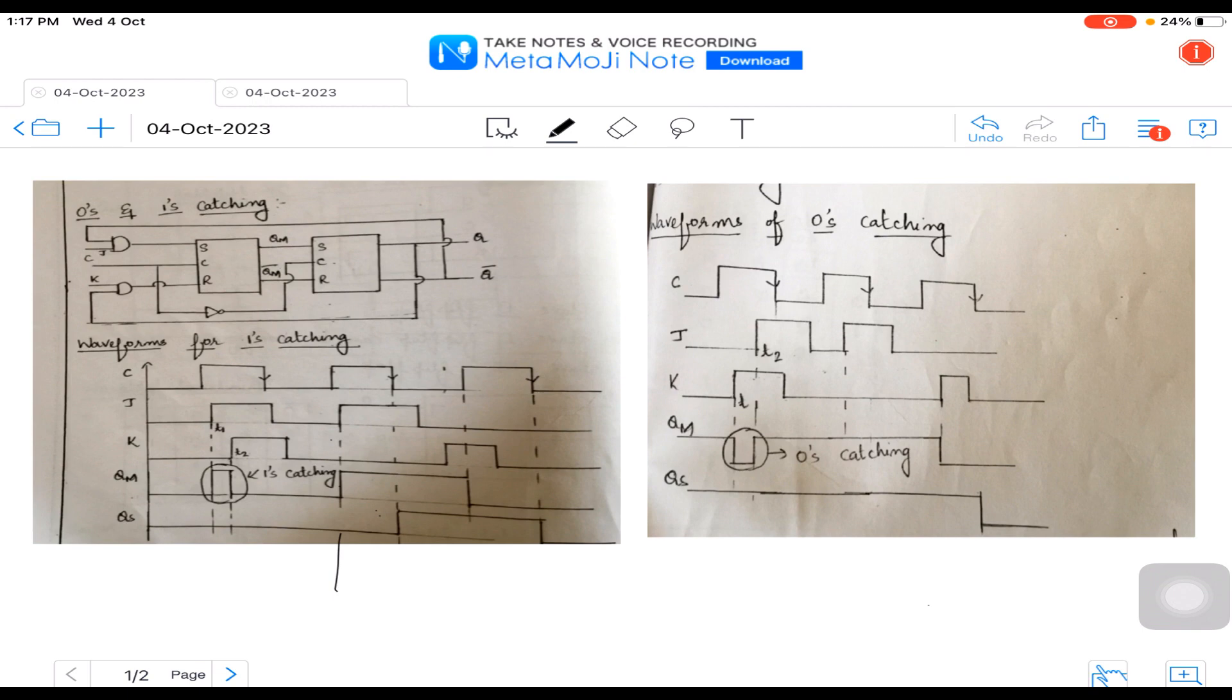Let us observe the circuit diagram for 0s and 1s catching. When you observe, we have considered SR flip-flop as master and slave. You can observe the circuit diagram here - the clock of the first SR flip-flop is connected to the clock of the second SR flip-flop through a NOT gate. We have two AND gates where one AND gate input is J and the other AND gate input is K. The other end of the AND gate is connected to Q output and the J other end is connected to Q bar. So this is the circuit to understand and analyze 0s and 1s catching.